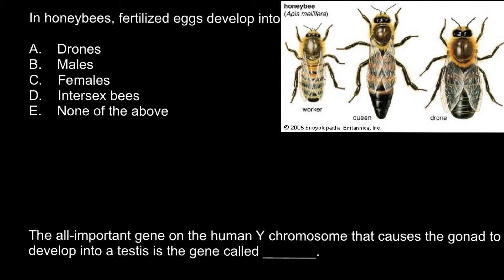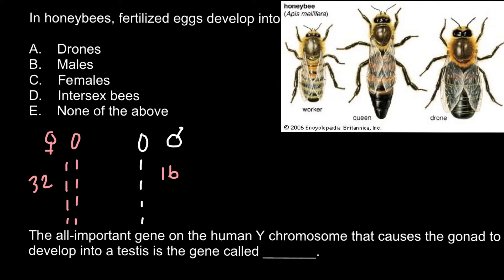Imagine that this is female bee and this is male bee. The female has two sets of chromosomes — total number of chromosomes would be 32, that is 16 pairs. The male has only one set of chromosomes, so the total number is 16. So females are diploid and males are haploid.